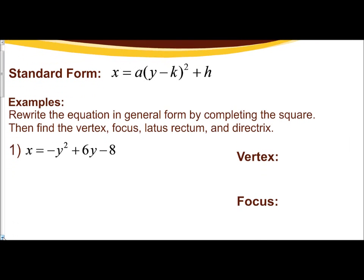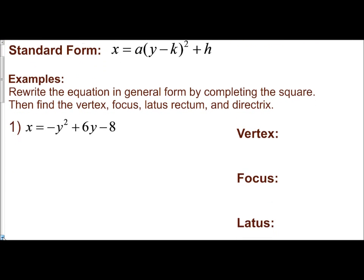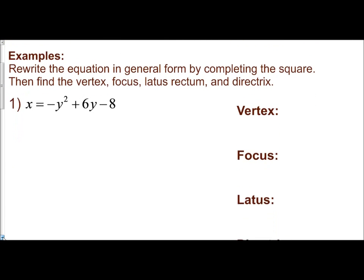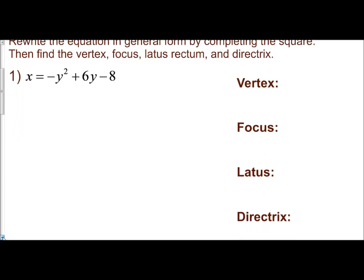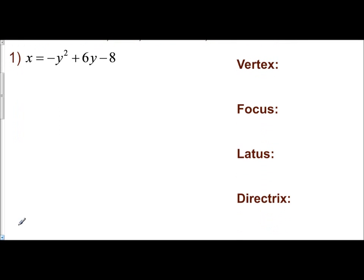Let's write the equation in standard form and find all the points — the vertex, the focus, the length of the latus rectum, and the directrix. You cannot complete the square until your quadratic and linear terms are isolated.